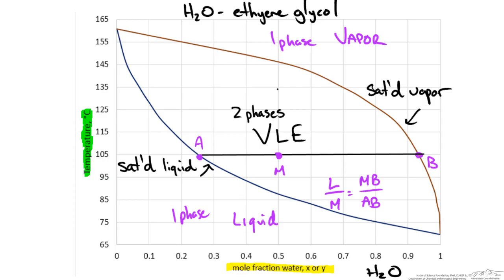We could do the same thing if we wanted to compare L to V, the amount of liquid to the amount of vapor. In this case it would just be the distance MB over the distance AM.